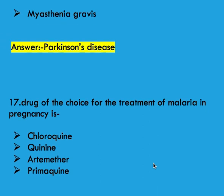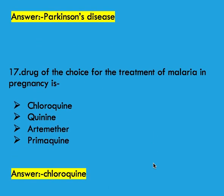Next question: drug of choice for the treatment of malaria in pregnancy. Options: chloroquine, quinine, pyrimethamine, and primaquine. Right answer is chloroquine.